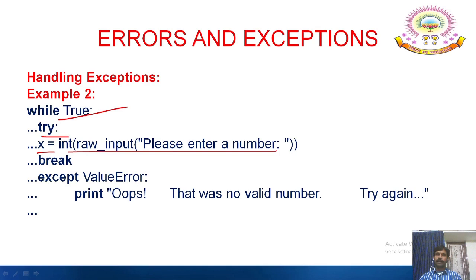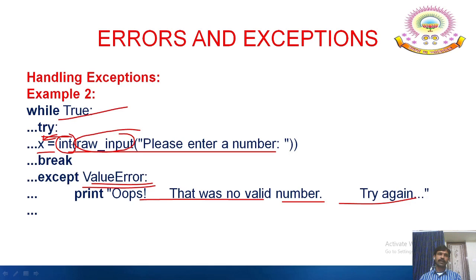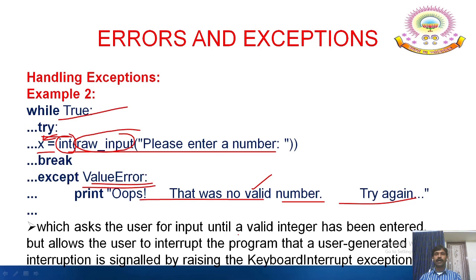Example 2: while True — try: x = int(raw_input('Enter a number')). If a ValueError occurs — because raw_input receives a string value and conversion to integer fails — it displays the message 'No valid number, try again', and asks the user for input until a valid integer has been entered. It also allows the user to interrupt the program; that interruption is signaled by raising a KeyboardInterrupt exception.